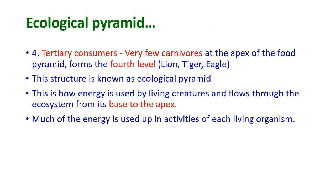The fourth level is the tertiary consumers. Very few carnivores at the apex of the food pyramid form the fourth level. For example, lions, tigers, and eagles are at the apex level in an ecosystem. This structure is known as the ecological pyramid.